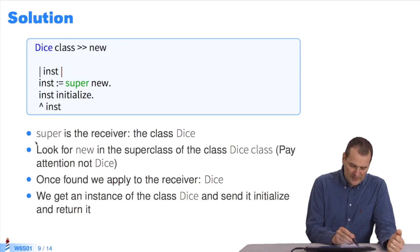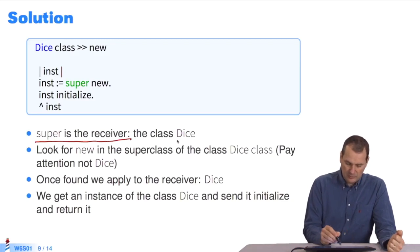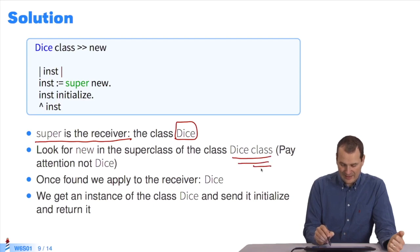What does this say about our system? I told you, super is the receiver. The receiver was Dice. So I look for new in the superclass of the Dice class. The key here is that it's Dice class and not Dice. We'll see it graphically afterwards.